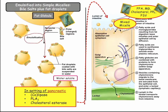So they get digested. The bile salts are still there, and the digested products of our simple micelle become a mixed micelle, because the triglycerides are now free fatty acids, monoglycerides, cholesterol, phospholipids, fat-soluble vitamins — and still with bile salts. The bile salts bring it right to the surface of the enterocyte where they get absorbed. That's called a mixed micelle.